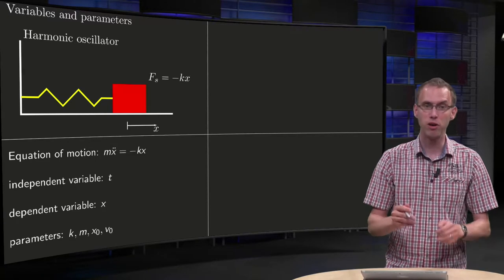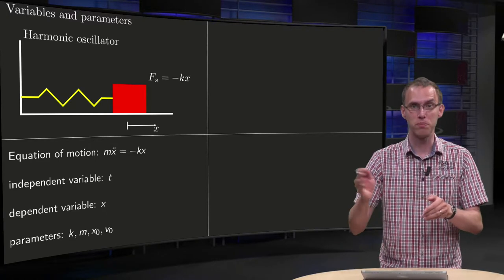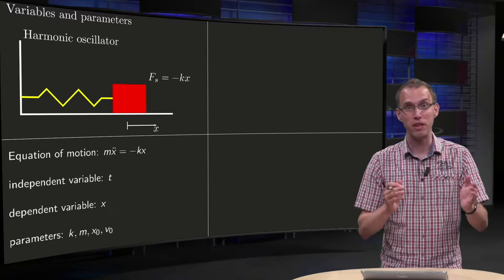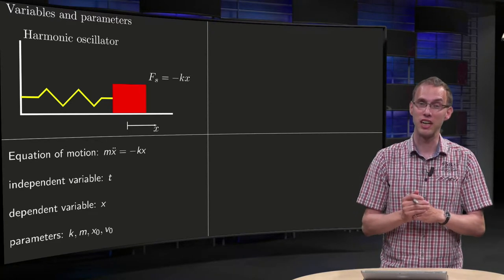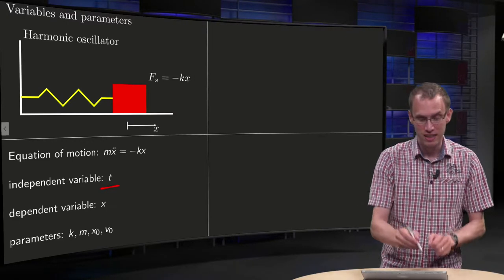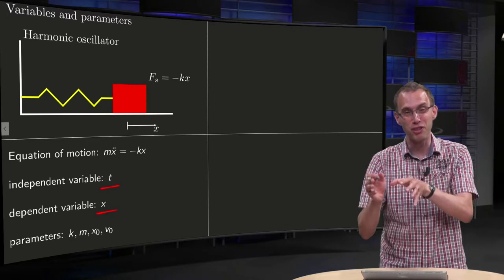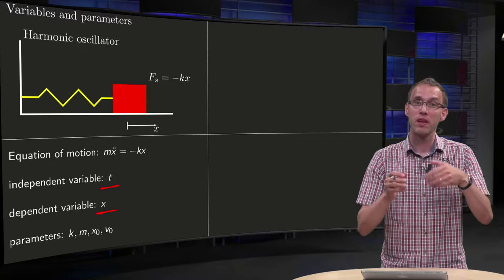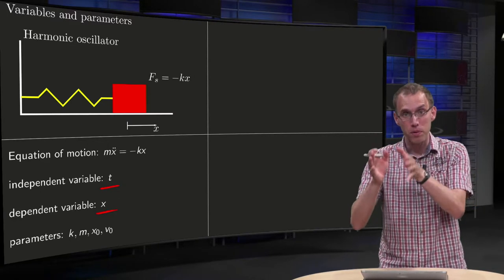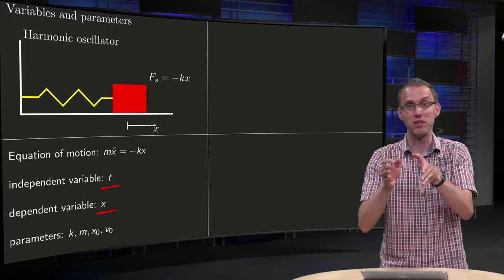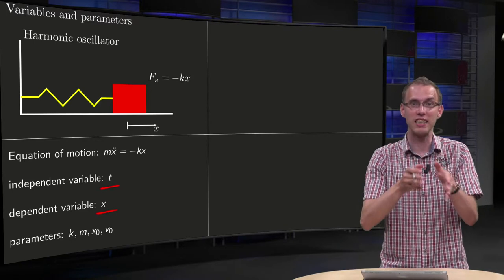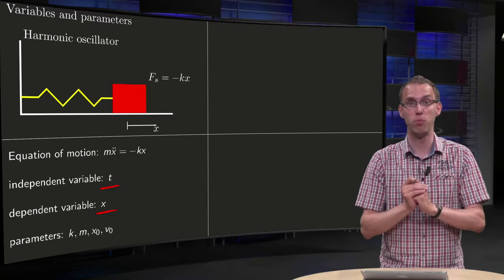Then we know the equation of motion: m times acceleration equals minus k times x. So what are our independent variables and dependent variables in this case? Well, the independent variable will be t. We want to find x, the displacement x, as a function of t. So our dependent variable, the one we want to find, is x, but x will in the end depend on t. T may be chosen freely, and then in the end we want to find x as a function of t. That's the goal of our model.